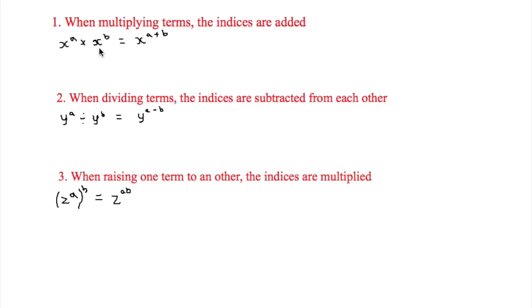So there are three more rules that you need to learn and these are when you combine indices. And when multiplying terms the indices are added and that is the first one. And the example I've given you here is x to the a times x to the b is equal to x to the a plus b.